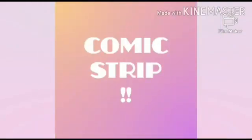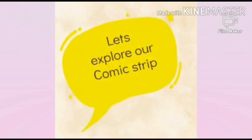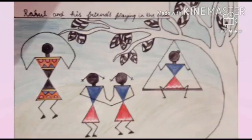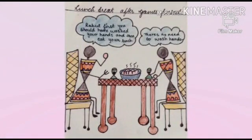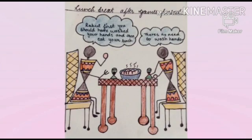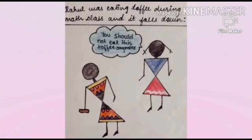Our group has decided to design a comic strip on this theme. Rahul and his friends were playing together in the ground. After playing, they went for their lunch. Rahul started to eat before washing his hands. Rahul was eating a toffee during his maths class. His toffee falls down and he picks it up and eats it, although his friends stopped him.